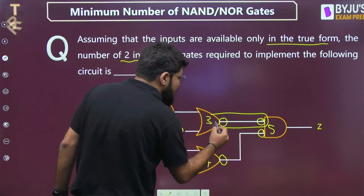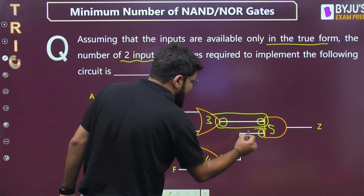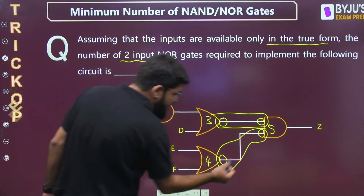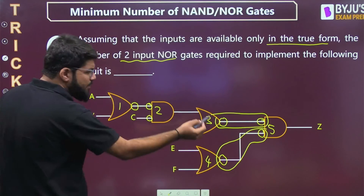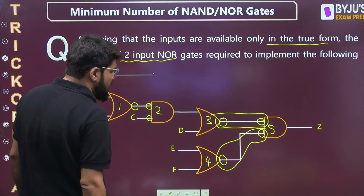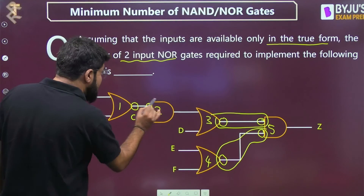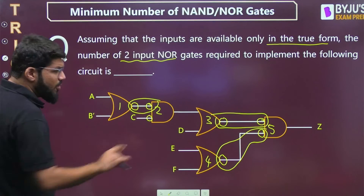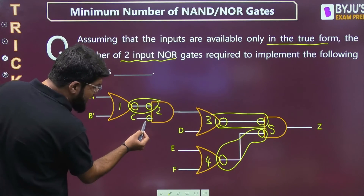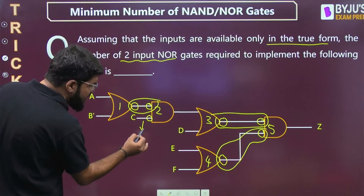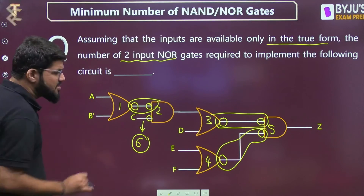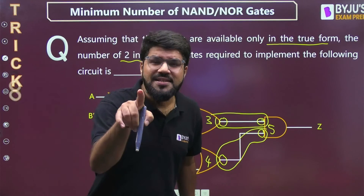Looking at the paths: this is a series bubble pair — they cancel, no problem. This is also back-to-back series — no problem. This is also series — no problem. So we still have 5 so far. But here there is one extra single bubble, so I increment the count to 6.